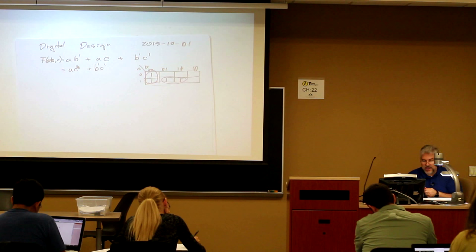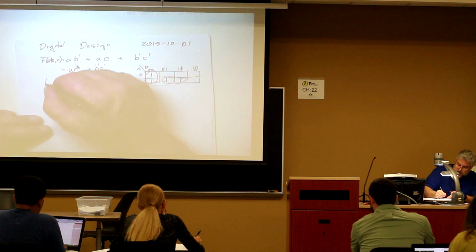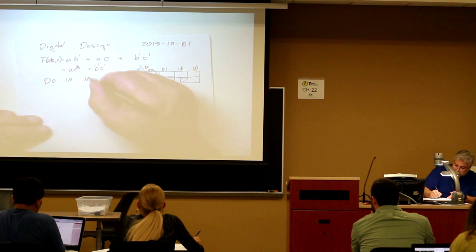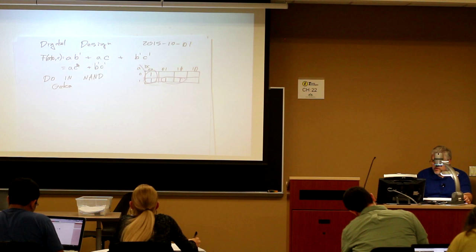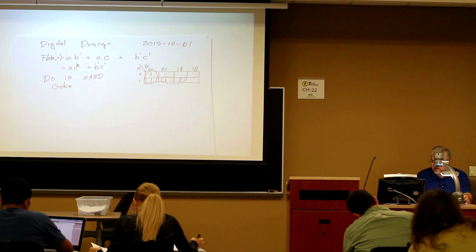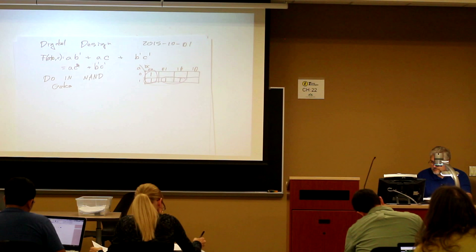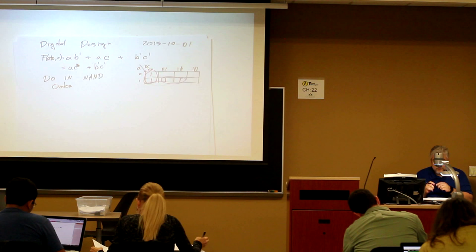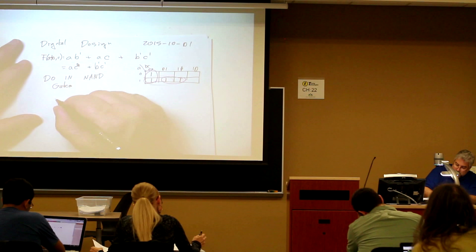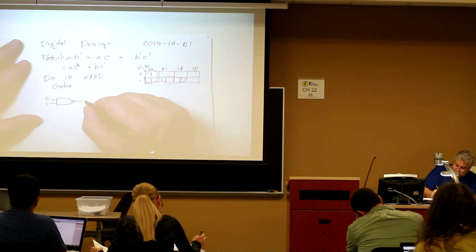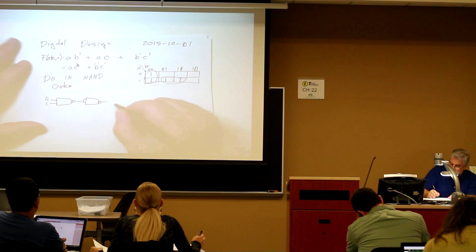Okay, so there we got that. And if I tell you, do this in NAND gates. Think you could do that? Well, let's do the full blown thing, right? We have an AND here, correct? So we have an input of A and C, goes into a NAND, and it follows with another NAND.